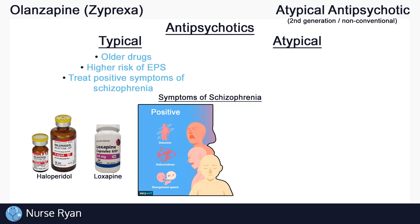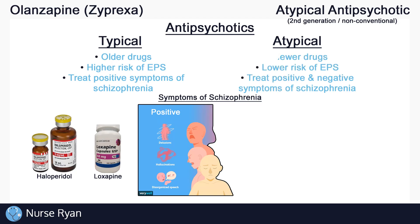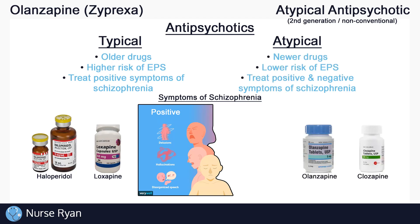Delusions, hallucinations, and disorganized speech are all examples of positive symptoms of schizophrenia. Atypical antipsychotics, like olanzapine, are the newer and generally safer options that show fewer extrapyramidal symptoms. Atypical antipsychotics are also used in the treatment of psychosis and behavioral problems, including schizophrenia.